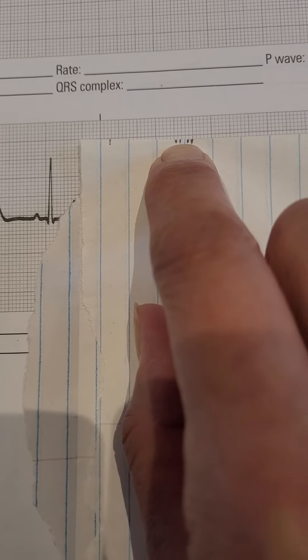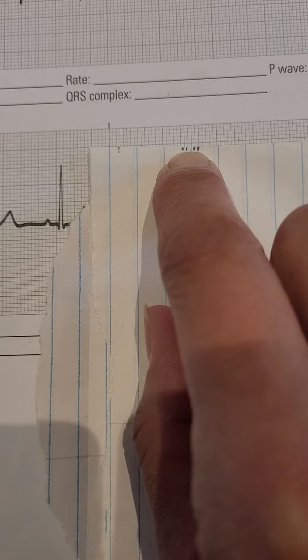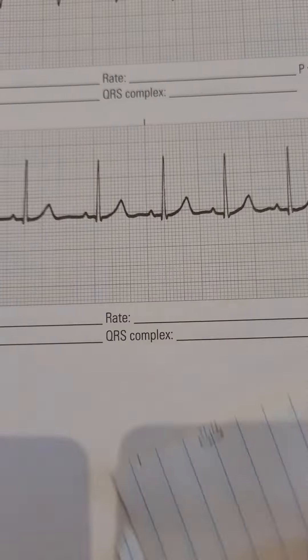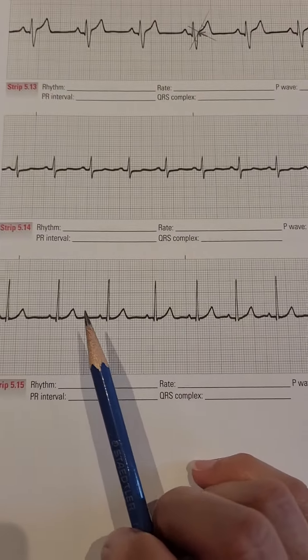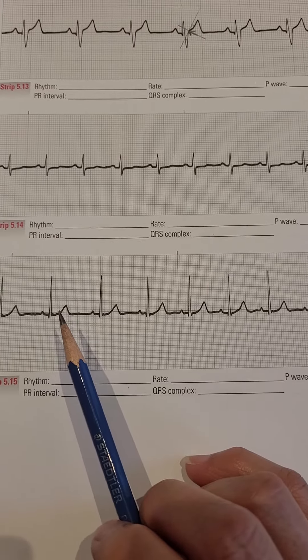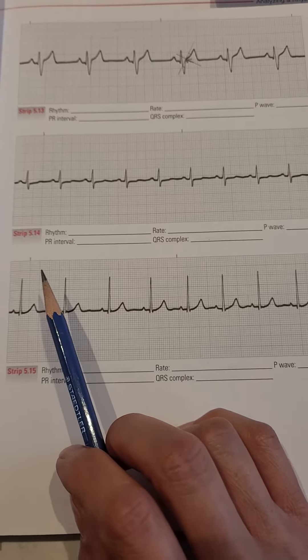This is more than three small squares, which meets the definition of an irregular rhythm. For irregular rhythms, calculate heart rate by counting the full complexes within a six-second strip. The six-second markings are here: three seconds, then another three seconds.